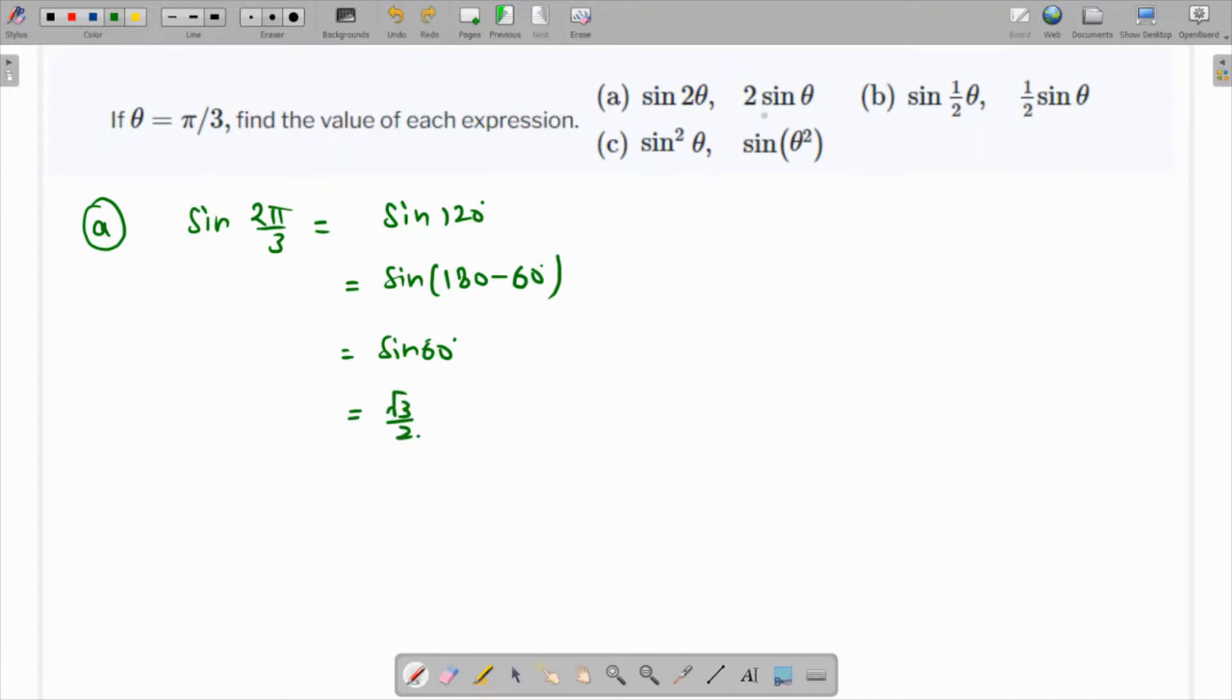Right, so part a has 2 - I think we have to find the value of 2 sine theta as well. So we need to find the value of 2 times sine of π/3. π/3 is again √3/2, so that's just √3.